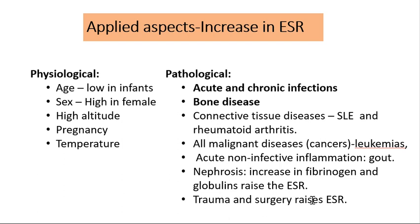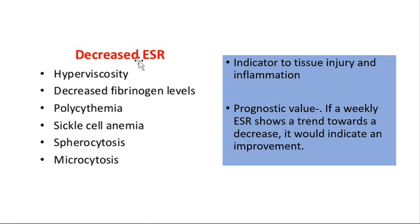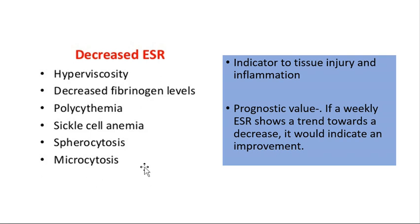Increased fibrinogen raises ESR because fibrinogen enhances Rouleaux formation. Trauma and surgery can also raise ESR. ESR can be reduced in conditions of high blood viscosity, decreased fibrinogen levels, polycythemia (increased RBCs settle faster in a mass), sickle cell anemia, spherocytosis, or microcytosis — as abnormal shapes descend faster. Normally ESR indicates tissue injury and inflammation, but a changing pattern has prognostic value: a weekly trend toward decrease suggests the patient is improving.